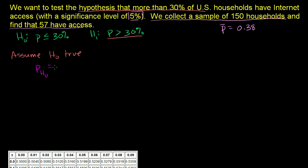We're going to assume the population proportion is 0.3, or 30%. If we said 29% or 28%, those would have been within our null hypothesis, but the probability of getting this result would have been even lower, so it wouldn't have been as strong a test. By taking the maximum proportion that still satisfies our null hypothesis, we maximize the probability of getting this result. If that number is still less than 5%, we can feel pretty good about the alternative hypothesis.